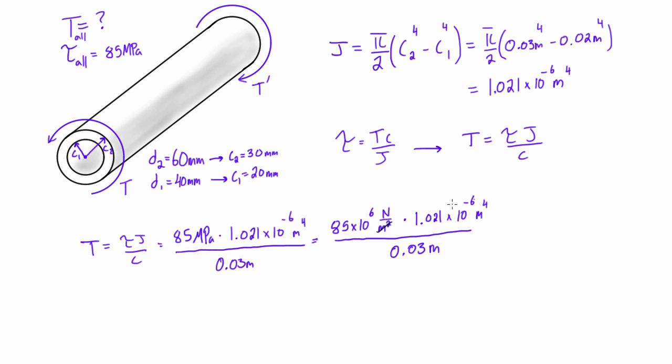But what we can do now is we can start cancelling out units. So we've got meters squared here. We'll cancel that out and that will leave us with meters squared here. And then we also got a meter down here, so we're going to bring that and that will reduce this down to a single unit of meters. And also we have this 10 to the 6 here and 10 to the minus 6, that's going to cancel out too. So we are just left with 85 times 1.021 over 0.03, and this is in units of Newton meters.